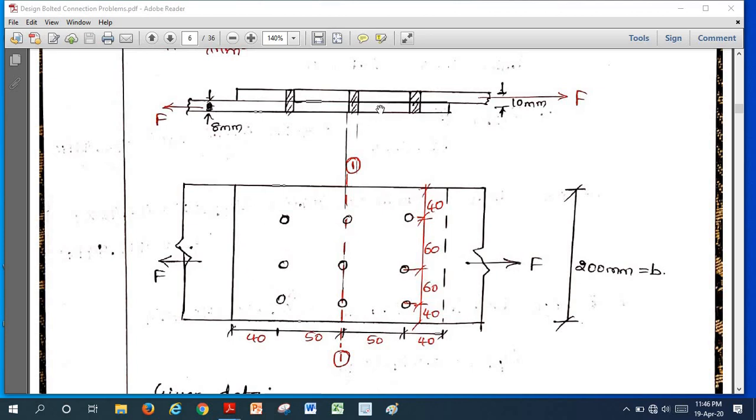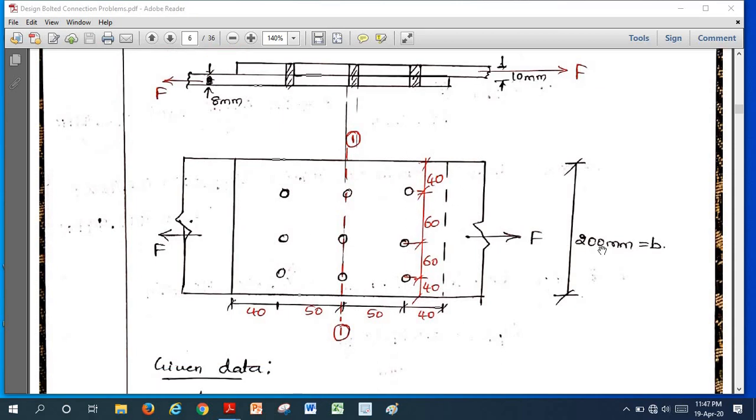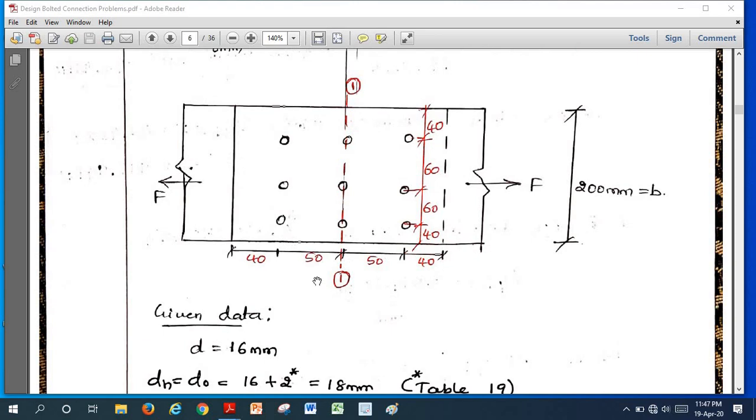Here this is the force direction. They connected these two plates using nine number of bolts in rectangular pattern. They connected in three rows and three columns. The width of the plate is 200 millimeter, that is B. End distance is 40 millimeter here. G is the gauge distance. Pitch of the bolt, that is along the force direction, if you measure the distance between two consecutive bolts, that is called pitch, that is 50 millimeter given.